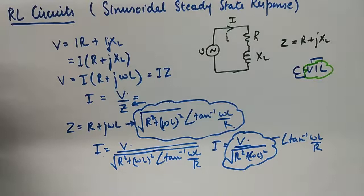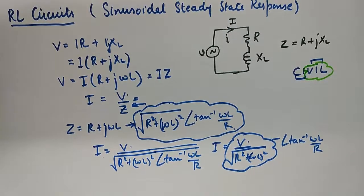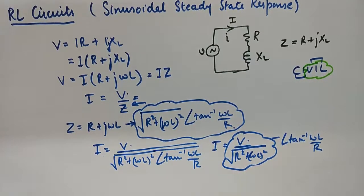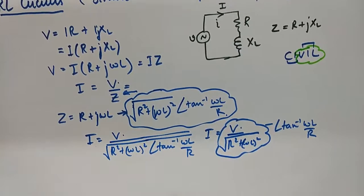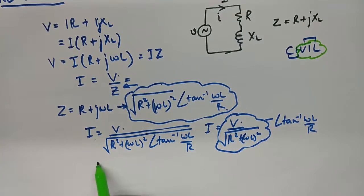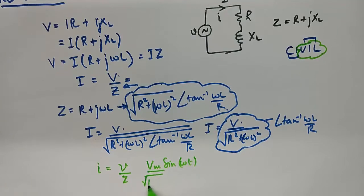So my voltage is definitely leading, and it is leading by an angle of tan inverse omega L upon R. Now if I was to calculate the instantaneous value of the current, which is V divided by Z, I will say this is VM sine omega T, and of course the magnitude of the Z will feature here.